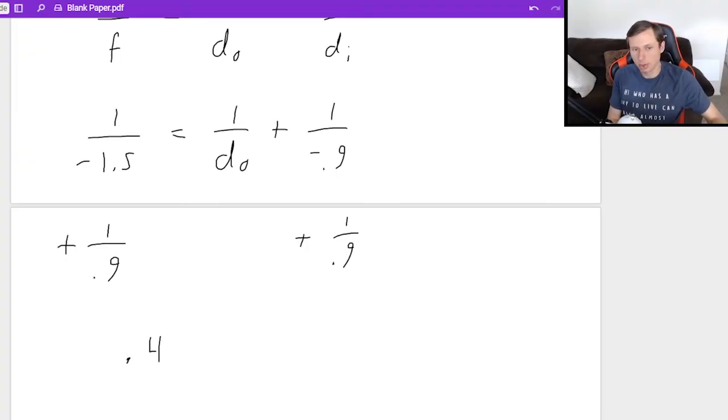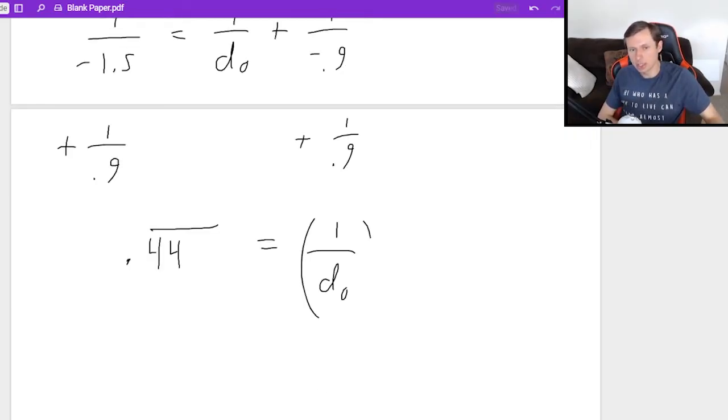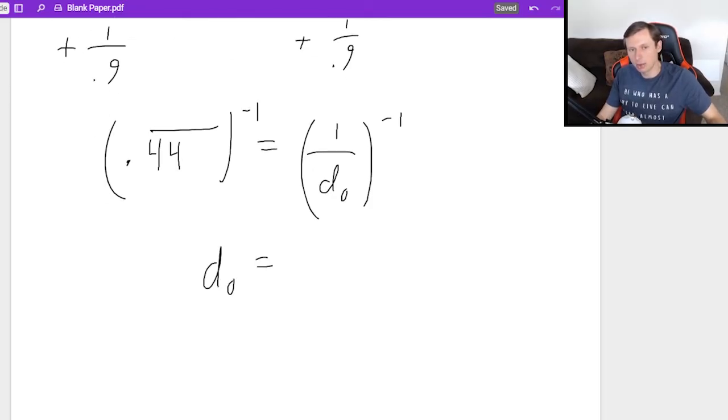My left side is going to be 0.44 repeating. That is equal to one over DO. And then to solve, I just take both to the negative first power by hitting that button on my calculator. And I will get an object distance DO of 2.25 meters.